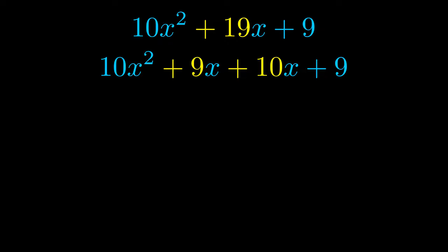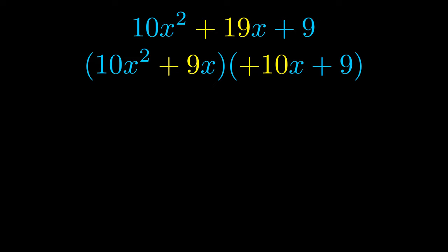Once we've done this, we go ahead and put parentheses around the first term and the last term. And we do that so that we can take the greatest common factor out of both terms. We can see the greatest common factor is now outside in green.